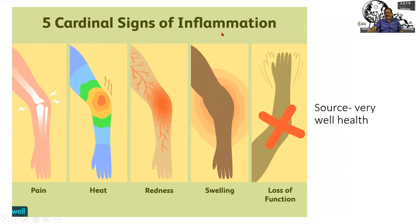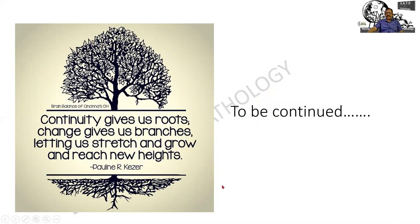So these are the cardinal signs of inflammation. There can be pain, heat, redness, and swelling — swelling means tumor, and tumor is a swelling. Redness is rubor. And ultimately there is a loss of function or functio laesa. Inflammation is not a segmented process — it is a continuous process. The moment there is an injury, multiple changes start happening. Continuity gives us the roots, changes give us the branches, and it lets us stretch and grow and achieve new heights. To be continued.